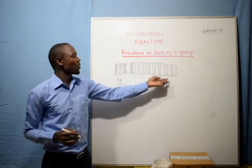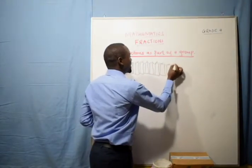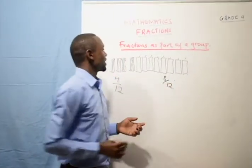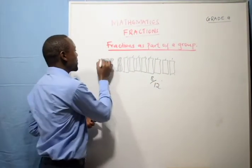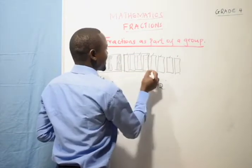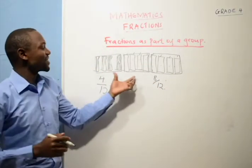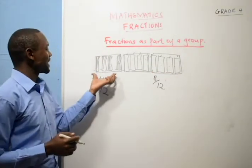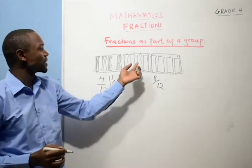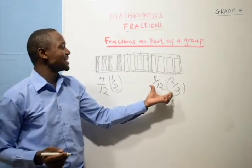Four over twelve of the whole group. How many girls are there? We have eight girls, so the fraction that will represent the girls will be eight over twelve. If we place them in groups of four, we have three groups. The group consisting of the boys is only one of the three groups, and two over three of the other groups will represent girls.